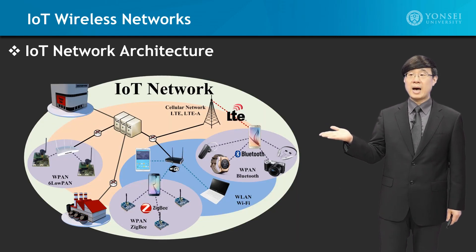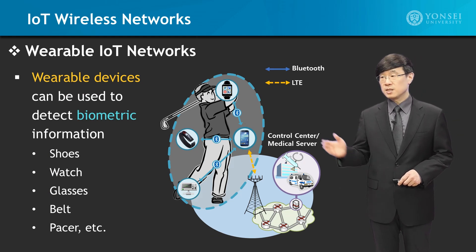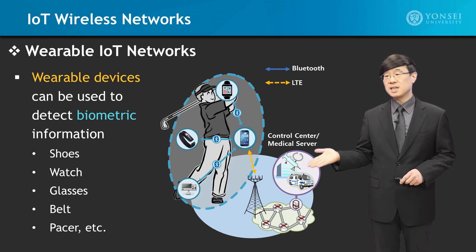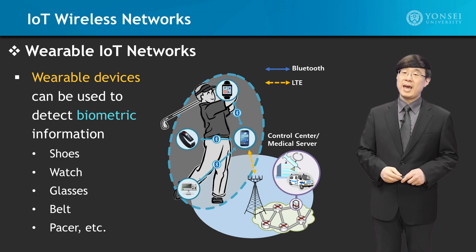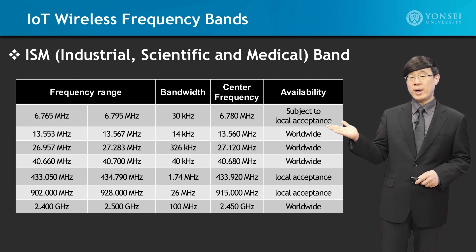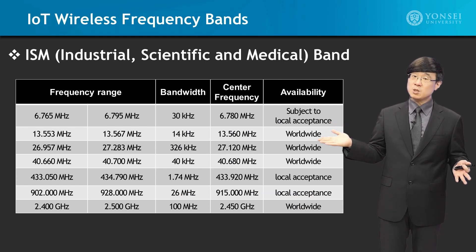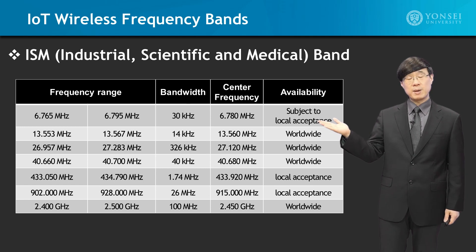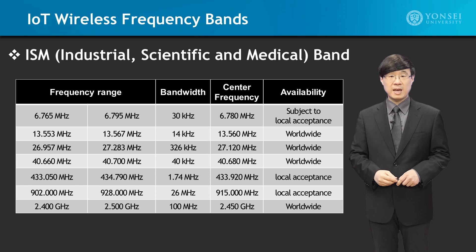Then we will go into IoT network architecture, which leads us into wearable IoT networks as well, to see how these connect together and help provide us with biometric and health monitoring systems. In addition, we will go and look into the ISM frequency band, because it is a very commonly used frequency band for IoT services.